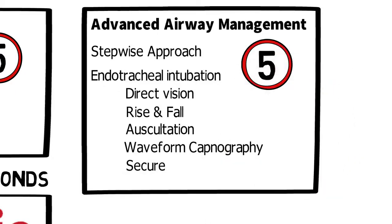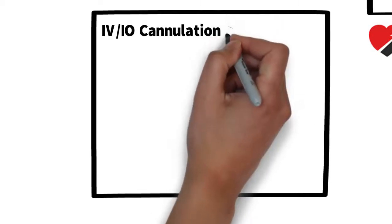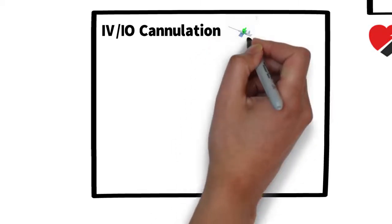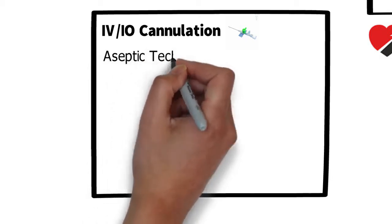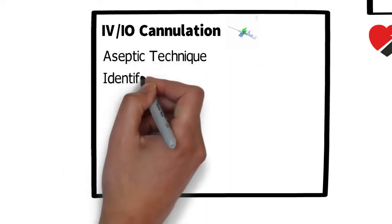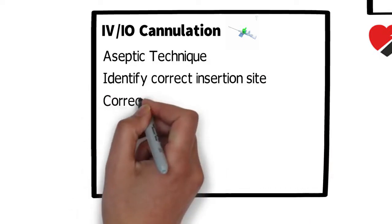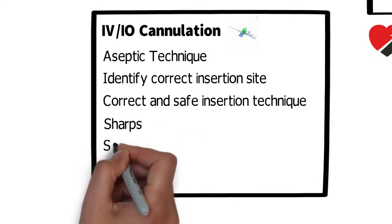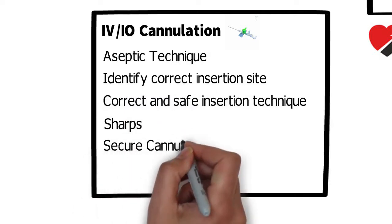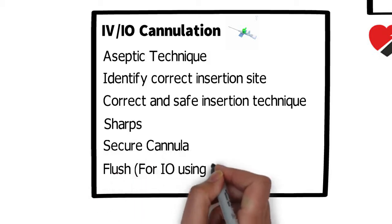For IV or IO cannulation, gaining rapid vascular access in children is often quickest using an intraosseous needle. This should be used in preference to an IV cannula unless a suitable IV site is immediately apparent. Key things we're looking for are aseptic technique, correct insertion site, correct and safe insertion technique using the EZ-IO, sharps safety and disposal, securing the IO cannula, and a flush using a three-way tap.